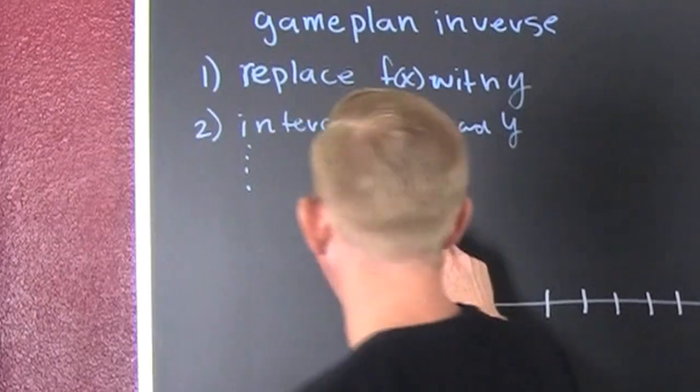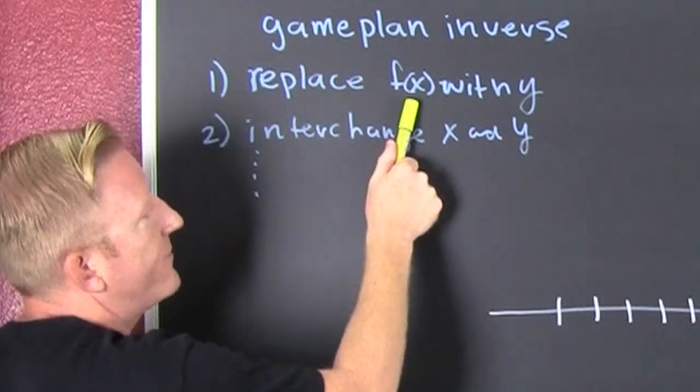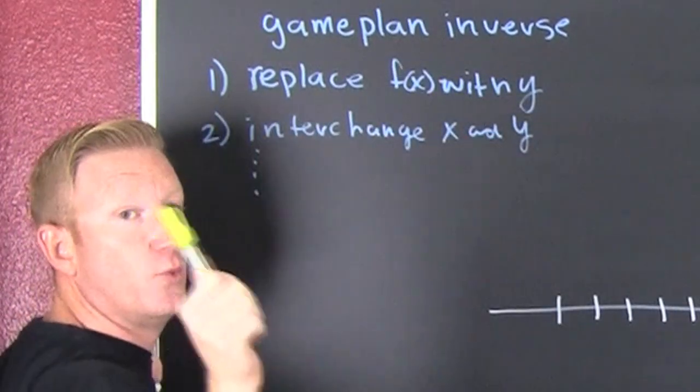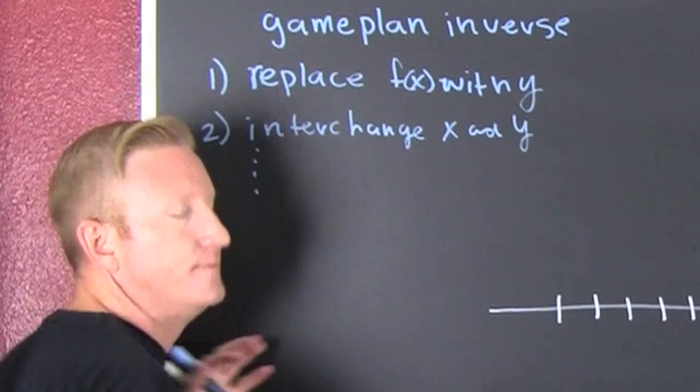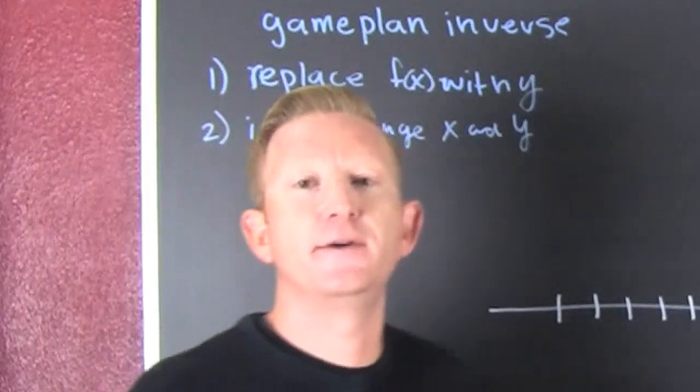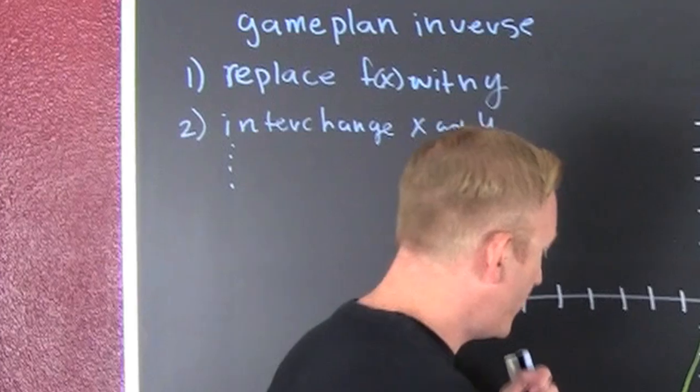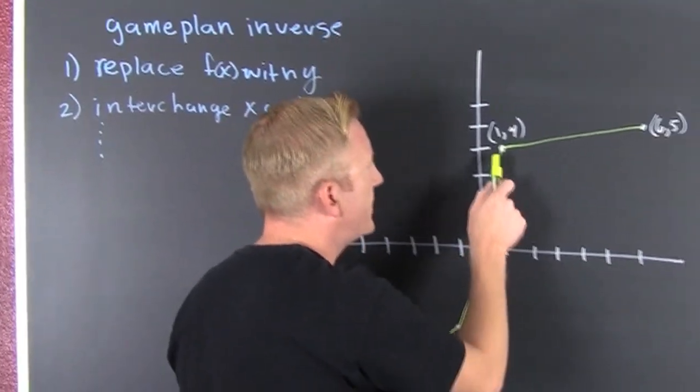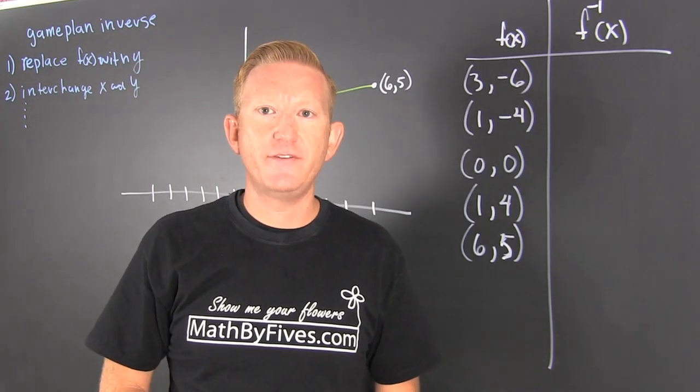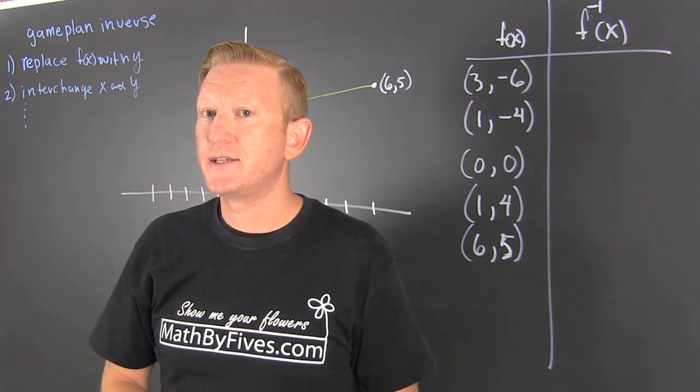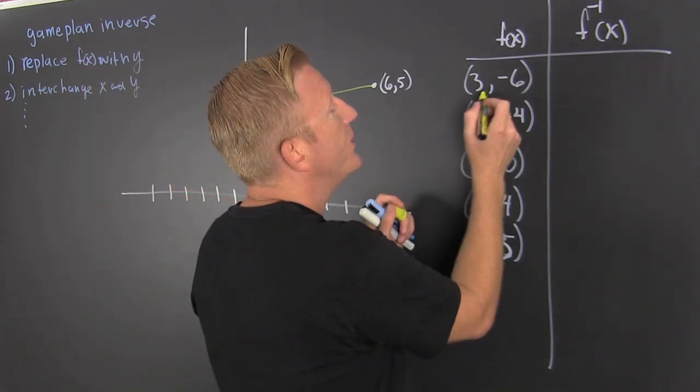This is the game plan for an inverse. First, you replace f(x) with y. Then you interchange x and y, and then you solve for y. Replace y with f inverse, but that's not the important part. The important part is I have these points here and I interchange x and y. That's what I'm going to do over here. I'm going to switch those two.